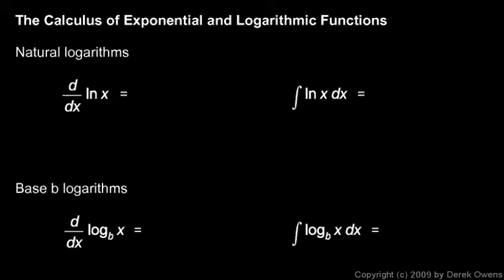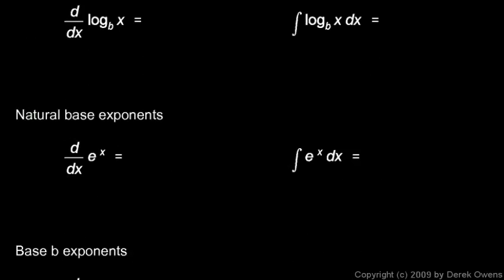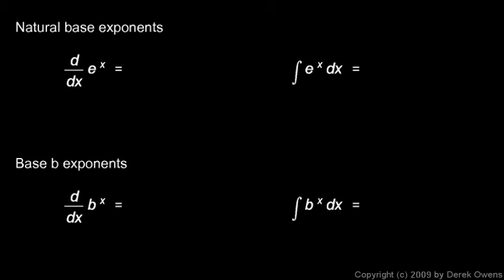We have things organized here. You see up at the top we have natural logarithms, and there's the derivative of the natural log of x, and the integral of natural log of x. And then right below that we have base b logarithms, the derivative and integral of base b logarithms. And if we scroll down, you'll see we have the derivative and integral of base e exponents, and the derivative and integral of base b exponents, where base b could be any number.